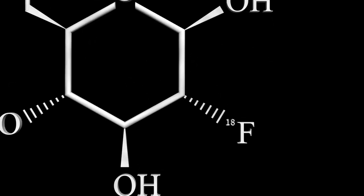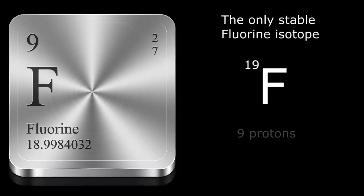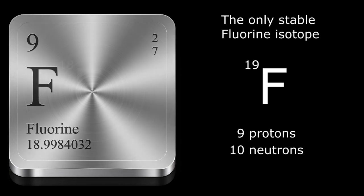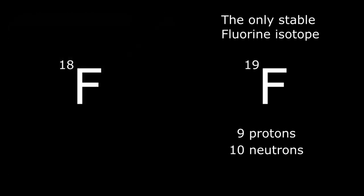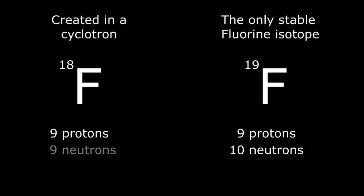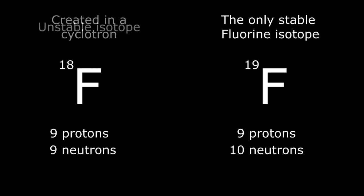Now let's take a closer look at the fluorine-18 atom. The only stable isotope of elemental fluorine is fluorine-19, with nine protons and ten neutrons. The isotope fluorine-18 is created in a cyclotron and still contains nine protons but only has nine neutrons. This isotope is unstable and therefore undergoes radioactive decay.